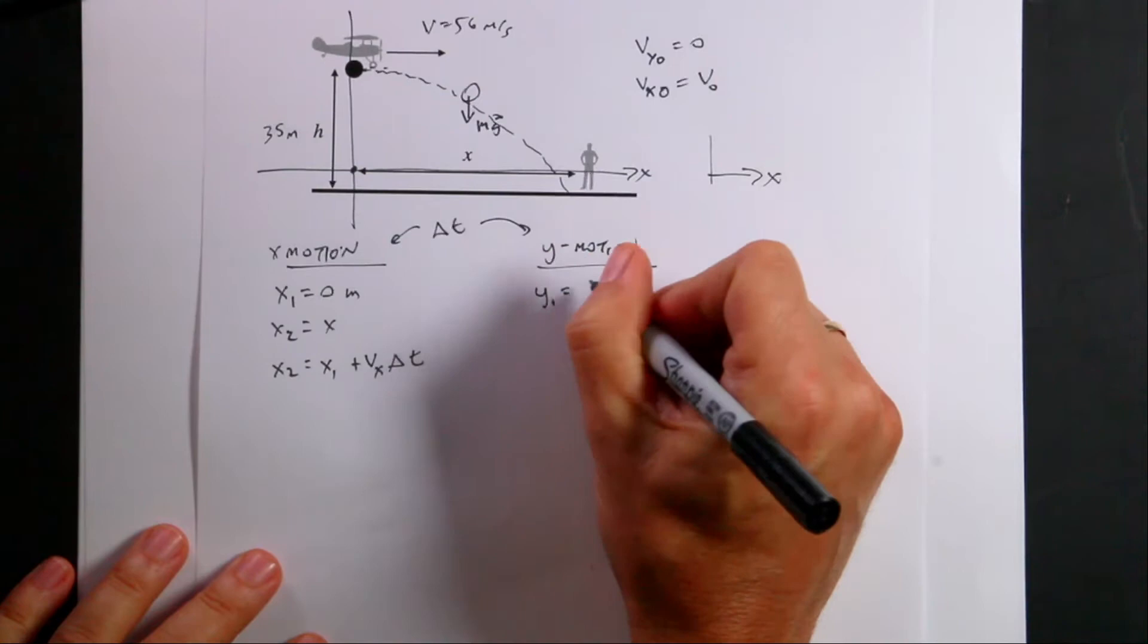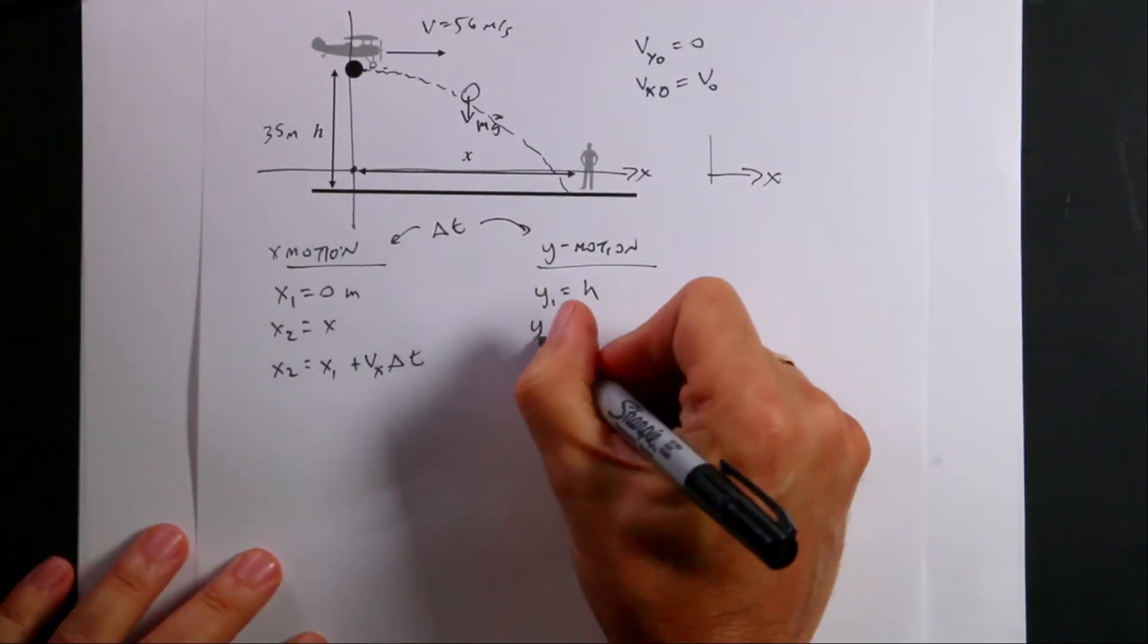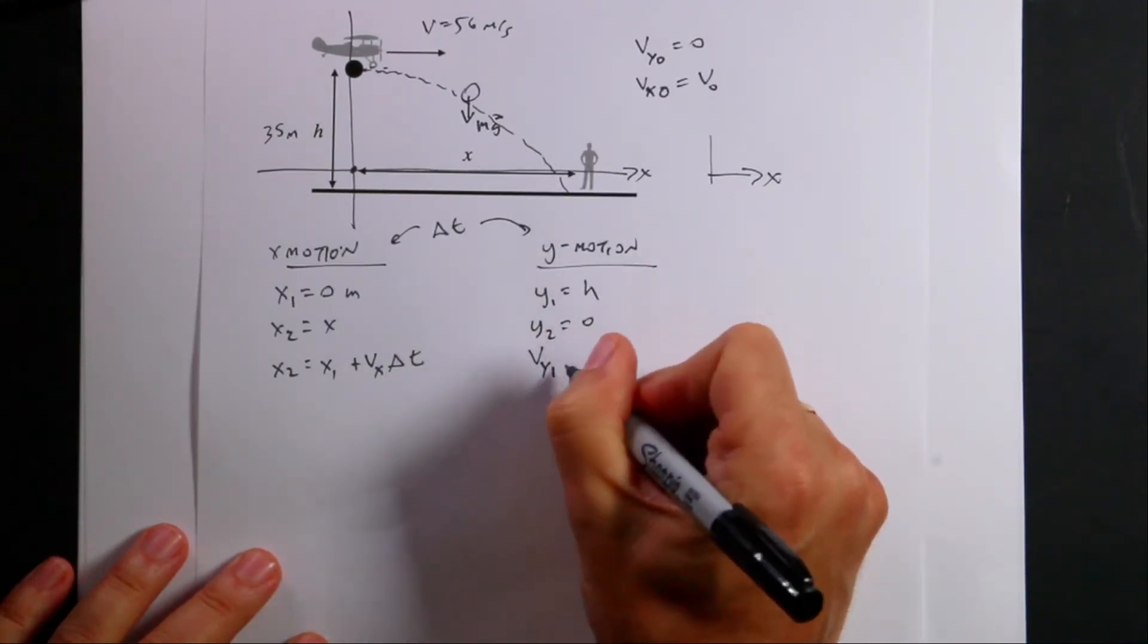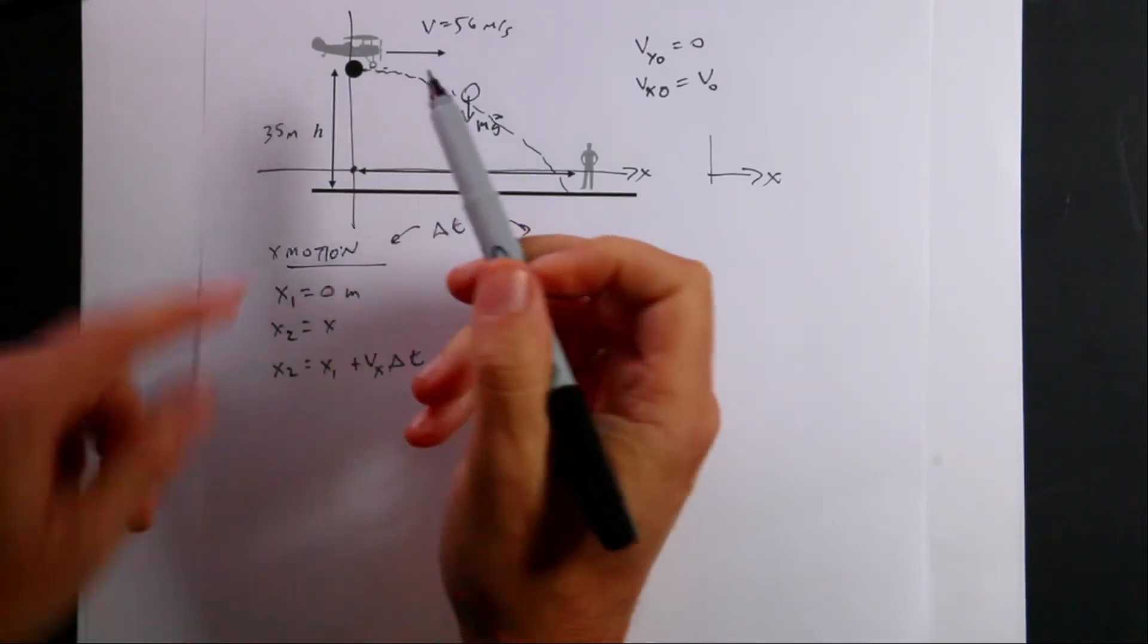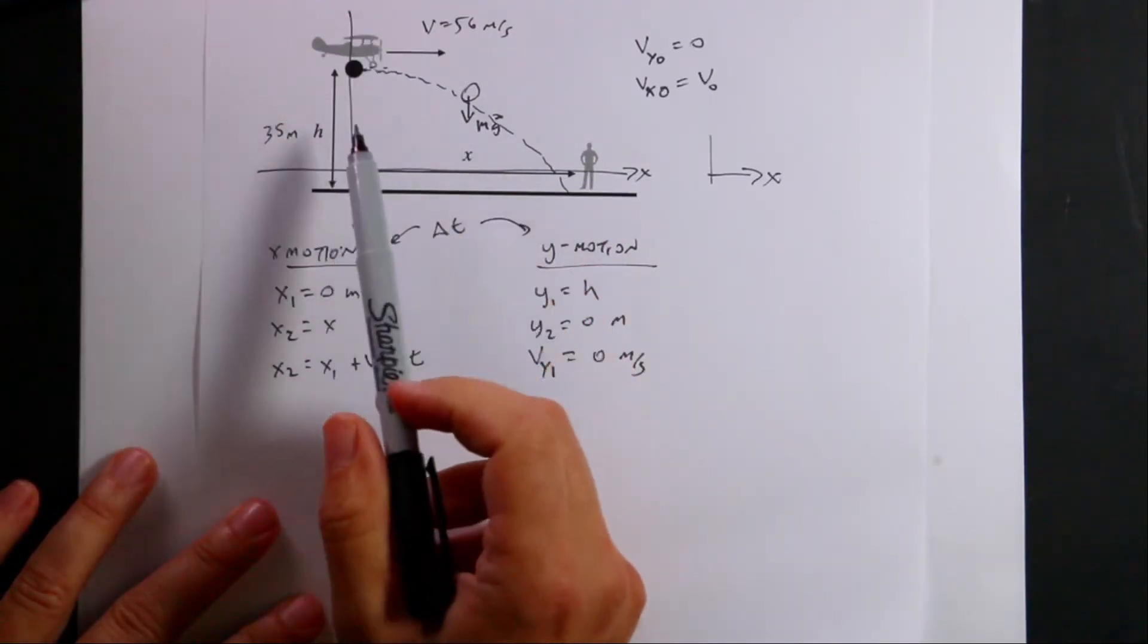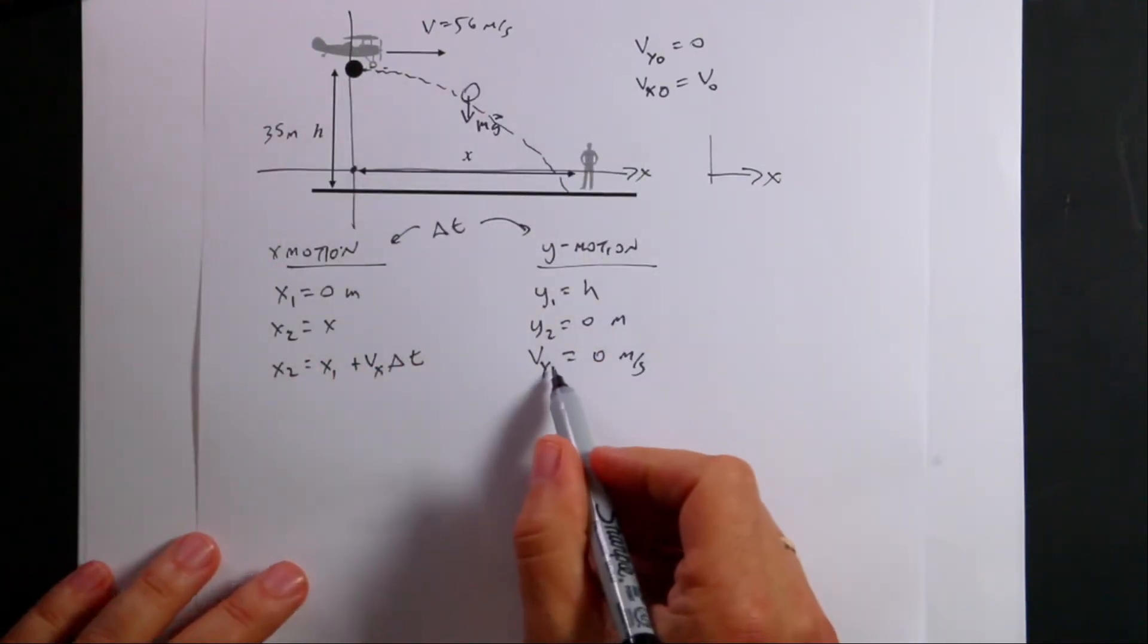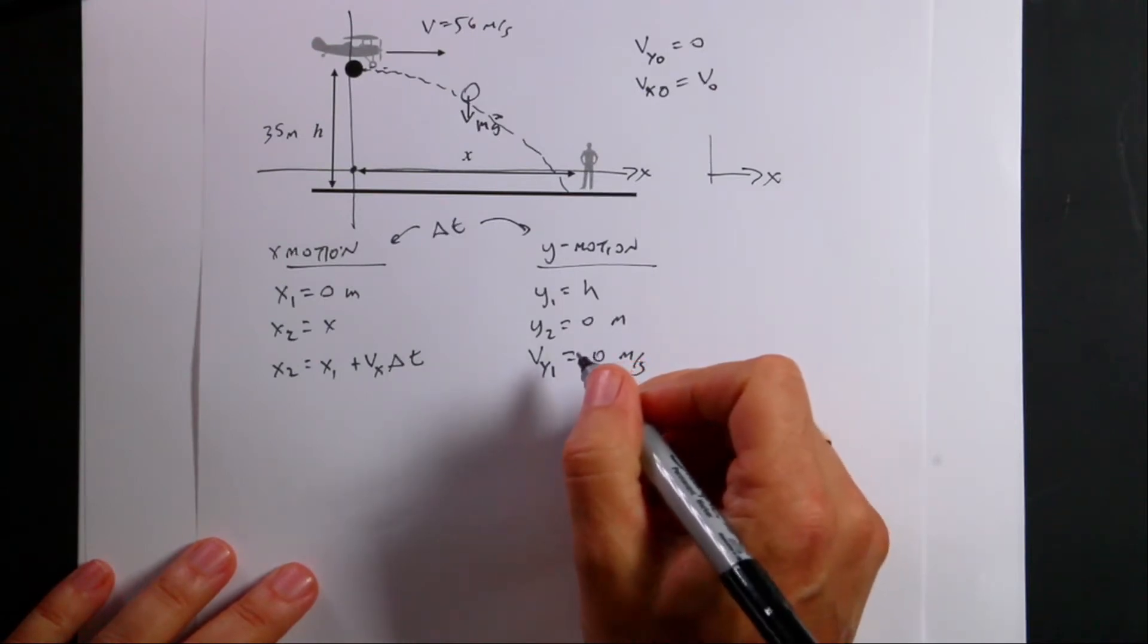I know y1, the initial y, is let's call that h, right? 35 meters. The final y, y2, is zero. It ends up at the ground. The initial y velocity, I'll call that vy1, is equal to zero meters per second. Because initially the ball is not moving in the up or down direction, it's launched horizontally. It's just dropped as it's moving. It's dropped, released from rest. So the initial y velocity is zero.